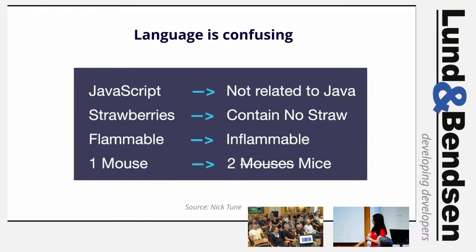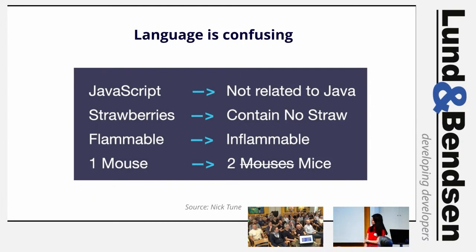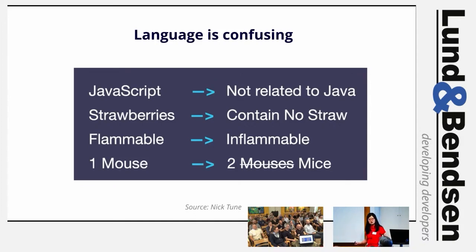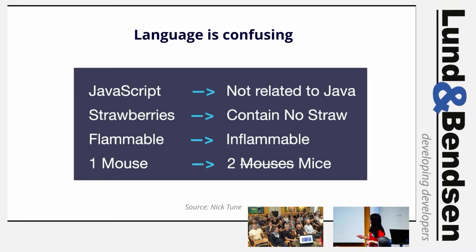Language is confusing. JavaScript is not related to Java at all. Strawberries contain no straw. Flammable means exactly the same as inflammable. And what is the plural form of 'mouse'? The answer is the famous 'it depends' — are you talking about the animal with the long tail, or a device with push buttons?